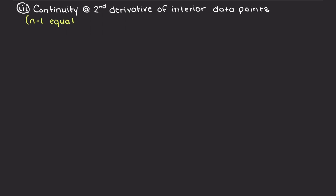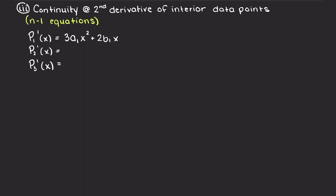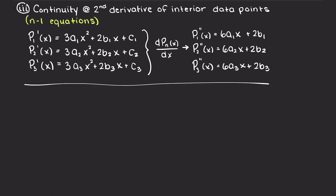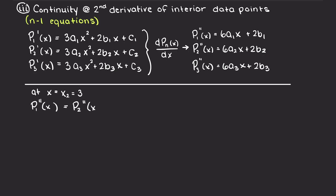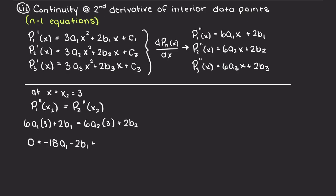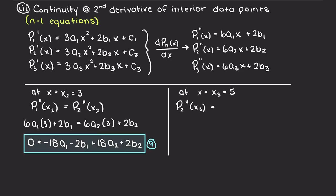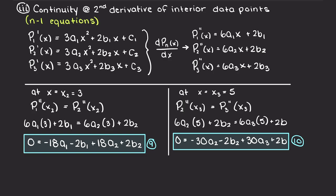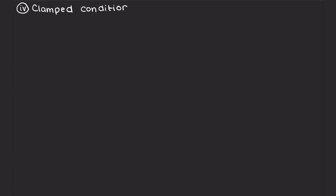We find n-1 equations from second derivatives as well, since in cubic spline interpolation we have smoothness at both the first and second derivatives. We equate and plug in x values: for the first interior point x equals 3, we get one equation; for the second interior point, evaluating P2 and P3 derivatives at x equals 5, we get another. Rearranging with all variables on one side and the constant on the other. We now have 10 equations and are missing 2.